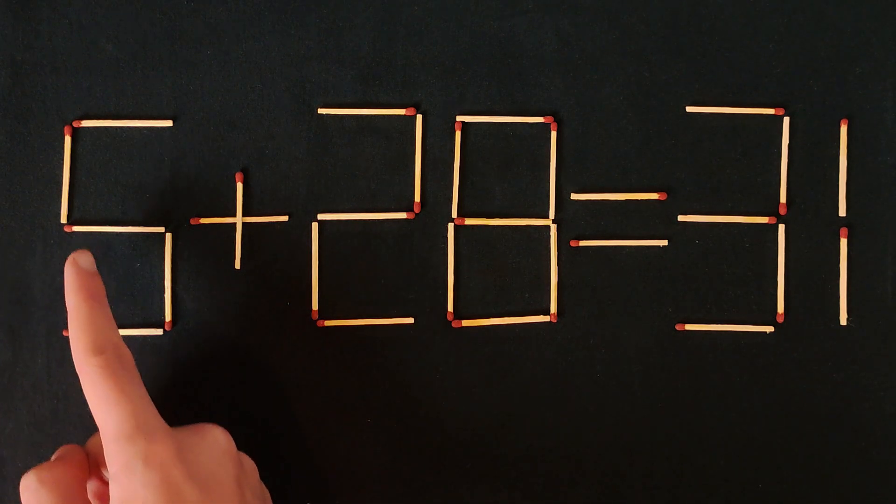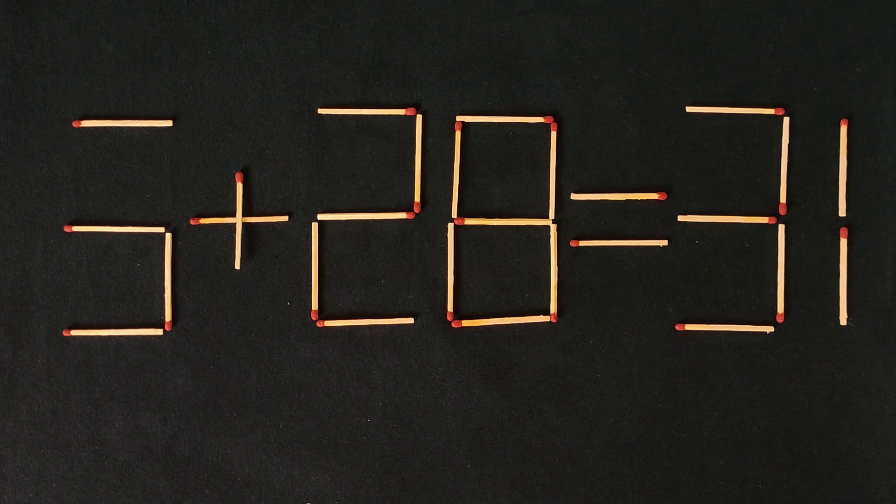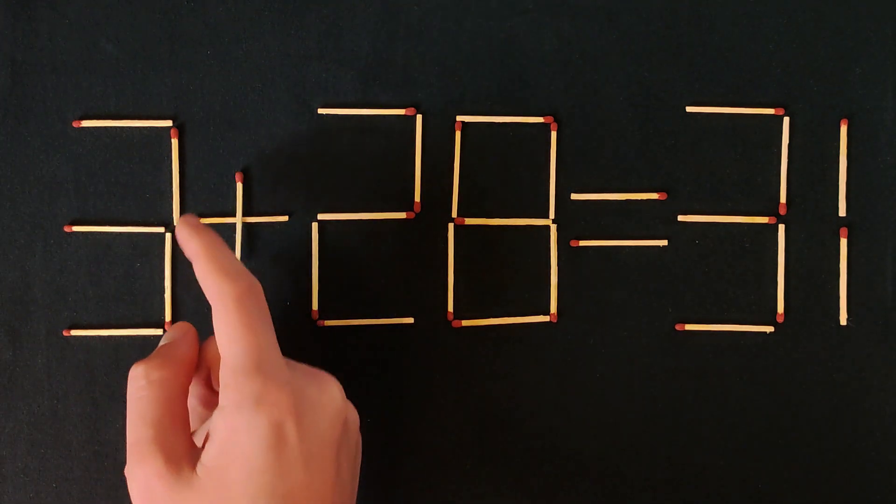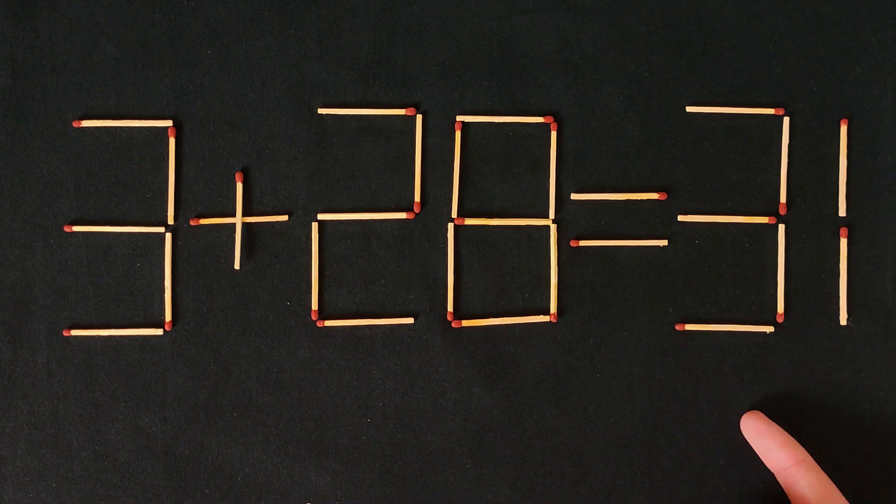And we need to move this match. Yes, we need to move it here. And now, 3 plus 28 equals 31. It's correct.